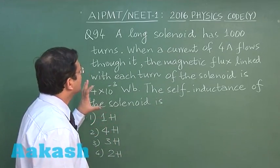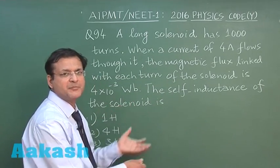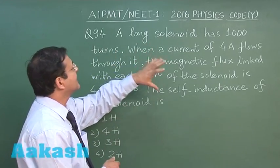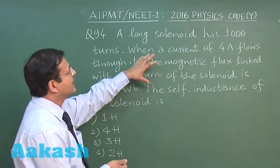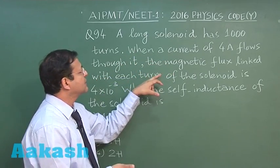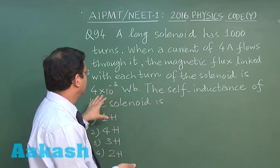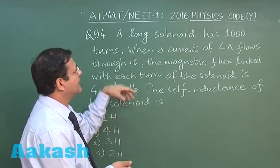The next question which is based on self induction is a very simple question, straightforward formula based. A long solenoid has thousand turns. When a current of 4 ampere flows through it, the magnetic flux linked with each turn is given.